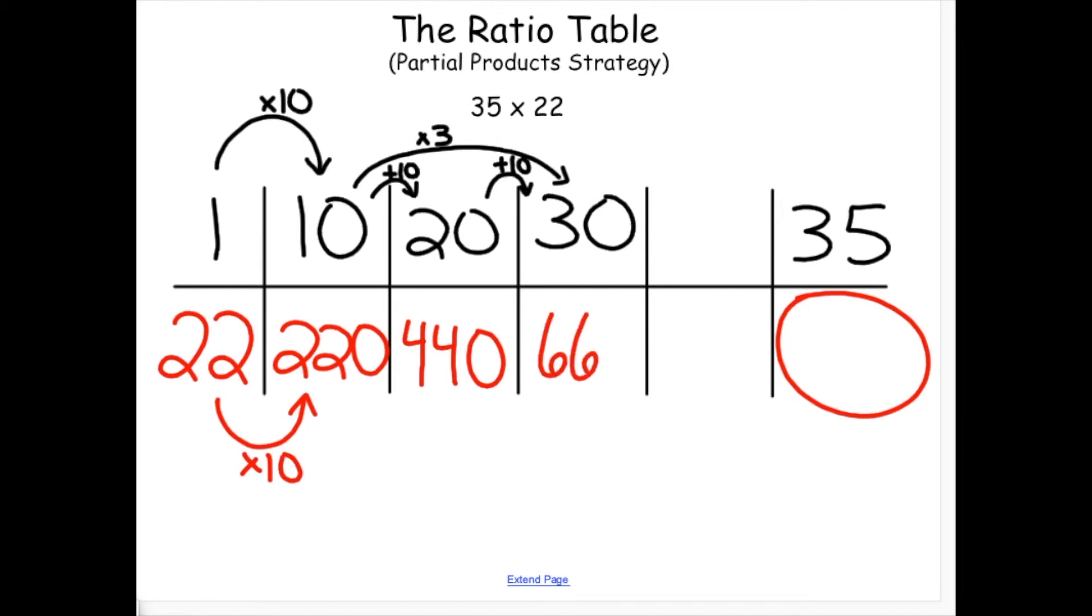Now all that's left is to get my last 5 groups of 22, and this is where I am going to look for any relationships between the numbers. There is a relationship between 5 and 10, because 5 is half of 10. If I divide my 10 groups of 22 in half, I get 5 groups equaling 110.